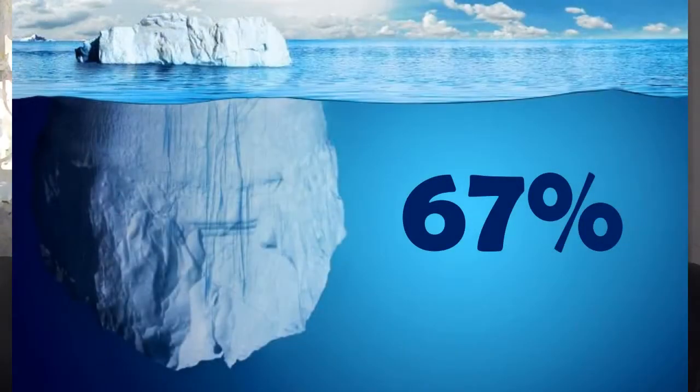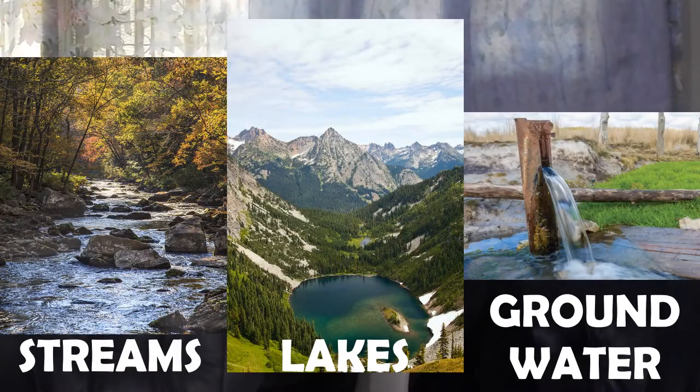About 70 percent of the Earth is covered with liquid water, and much of it is in the form of ocean water. Only three percent of the Earth's water is fresh — 67 percent of that is in the form of ice, and the remaining 33 percent is found in streams, lakes, and groundwater.